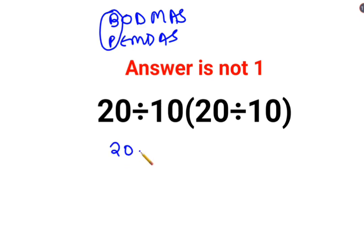So we keep the rest of the question as it is. Now since there is no sign between 10 and this bracket, that means the sign is supposed to be multiplication.